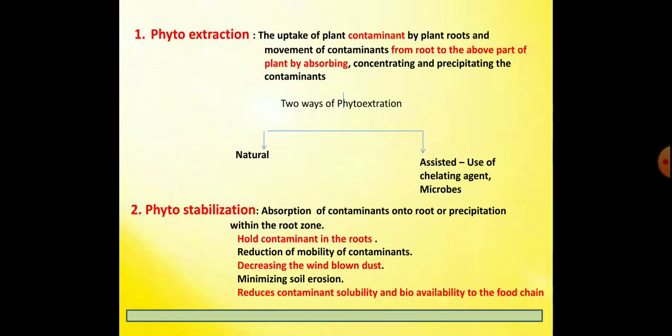In phytoextraction, the plant absorbs the contaminants and those absorbed contaminants are transferred to the above-ground part of the plant by absorbing, concentrating, and precipitating them. There are two ways of phytoextraction: one is natural, where the plant naturally absorbs contaminants, and the other is assisted, where chelating agents and microbes are used to help absorption.